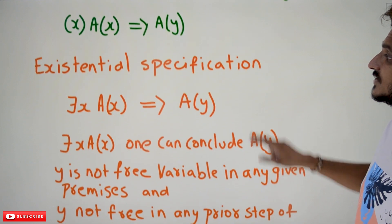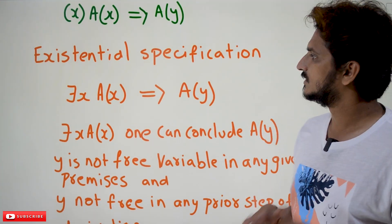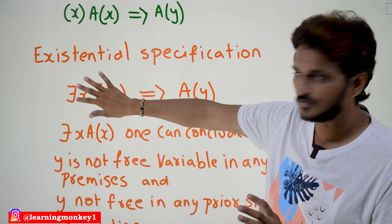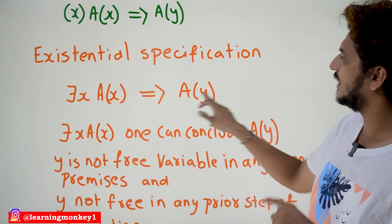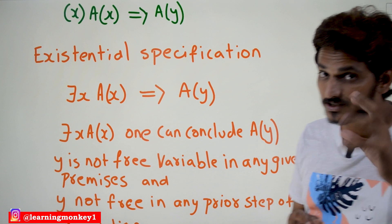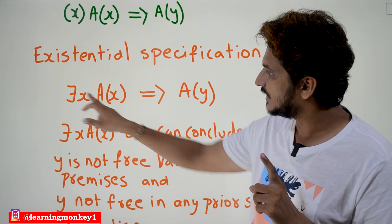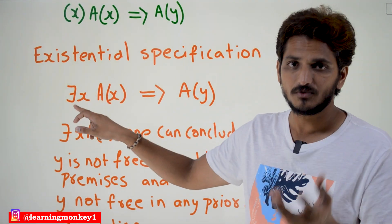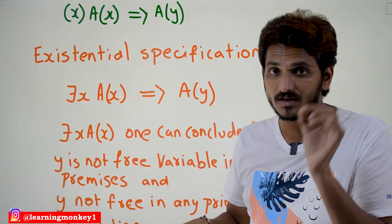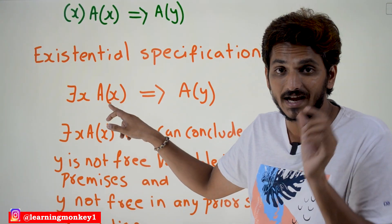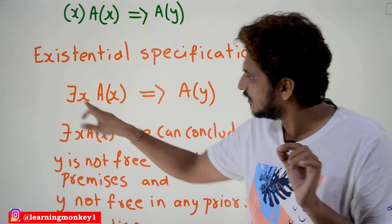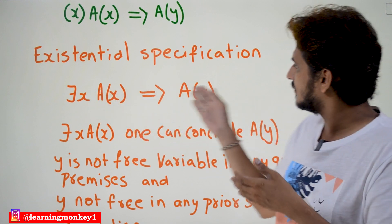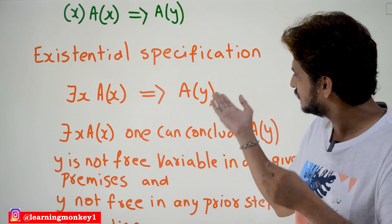Coming to the next formula: existential specification. If someone says there exists x, A(x) is true, then from this you can conclude that A(y) is going to be true. To understand the existential formula properly: there exists x, A(x) means at least one subject must satisfy A(x) for at least one x value for the formula to be true. That at least one value can be y.